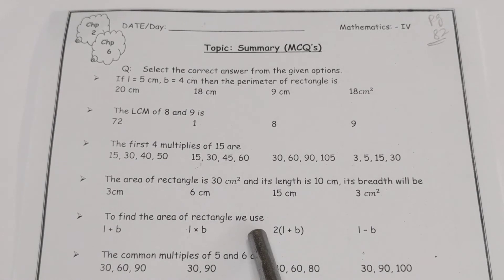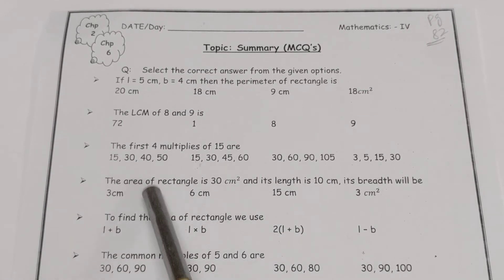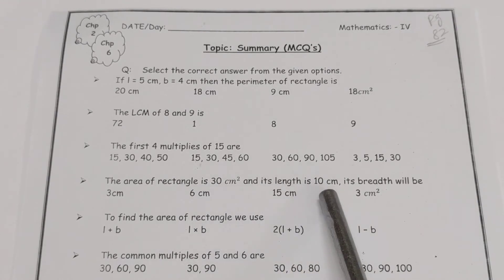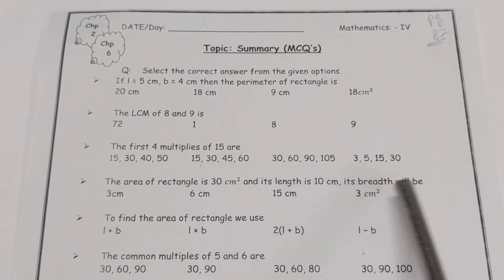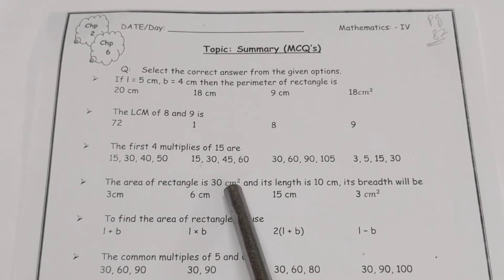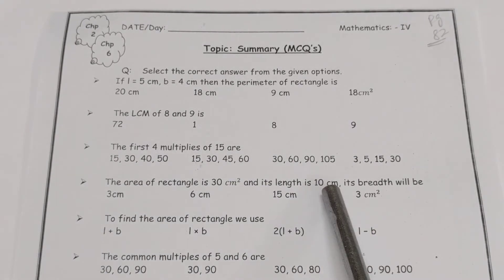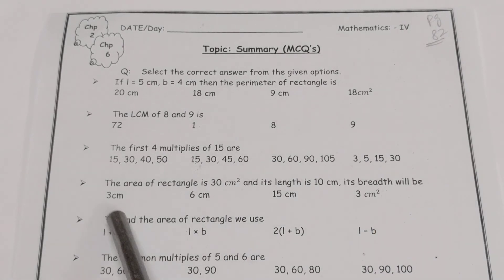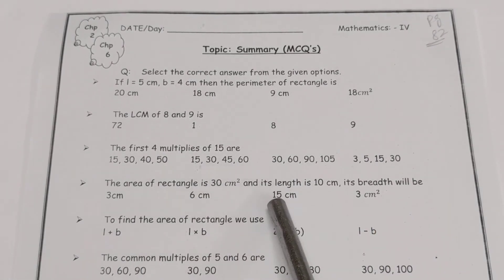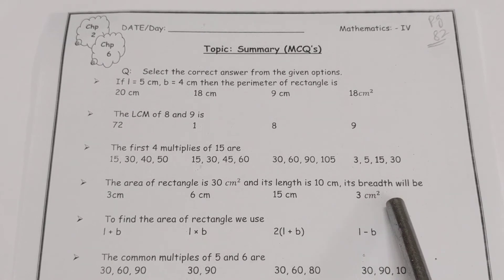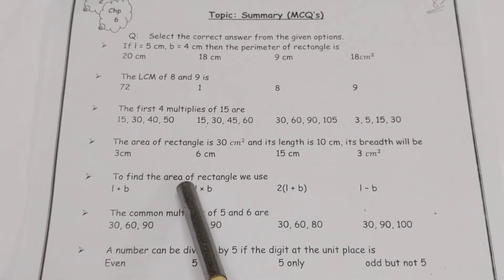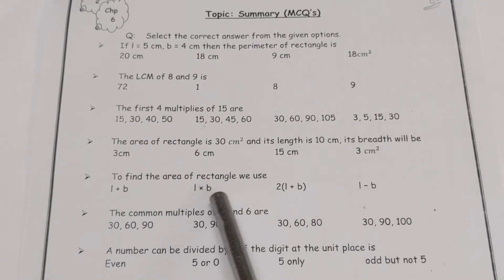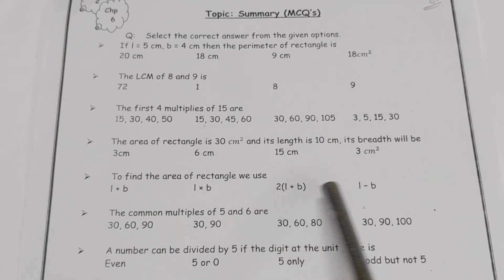The area of a rectangle is 30 centimeter square and its length is 10 centimeter; its breadth will be — area is given, length is given, you have to calculate the breadth. Options are 3 centimeters, 6 centimeter, 15 centimeter, or 3 centimeters square.